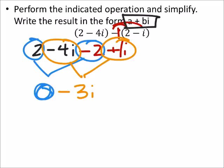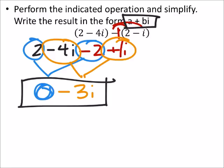And it did tell us that it wanted this in the form of a plus bi, and this will do. And if you wanted to write 0 plus negative 3i, that's fine. What I have there is okay too.